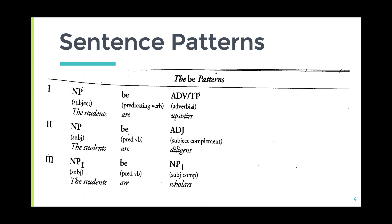In the second pattern, we have a noun phrase functioning as subject, the verb 'to be' as predicating verb, and an adjective as subject complement. Example: 'The students are diligent.' 'The students' is the noun phrase functioning as subject; 'are' is the predicating verb; 'diligent' is an adjective functioning as subject complement.